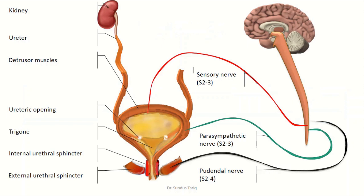Before we discuss the process of micturition, let's discuss the structures involved. The kidney forms urine, which moves via the ureters into the urinary bladder. The urinary bladder is a pyramidal-shaped structure when empty and becomes balloon-shaped when filled with urine. The ureters enter through its posterior wall, opening on the upper corners of a triangular structure called the trigone of the bladder.